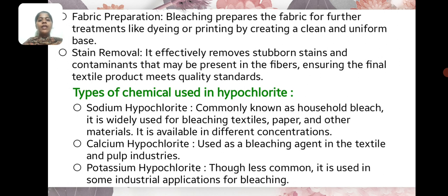Ensuring the final textile product meets quality standards. Types of chemicals used in hypochlorites — Sodium Hypochlorite: Commonly known as household bleach, it is widely used for bleaching textiles, paper, and other materials. It is available in different concentrations.